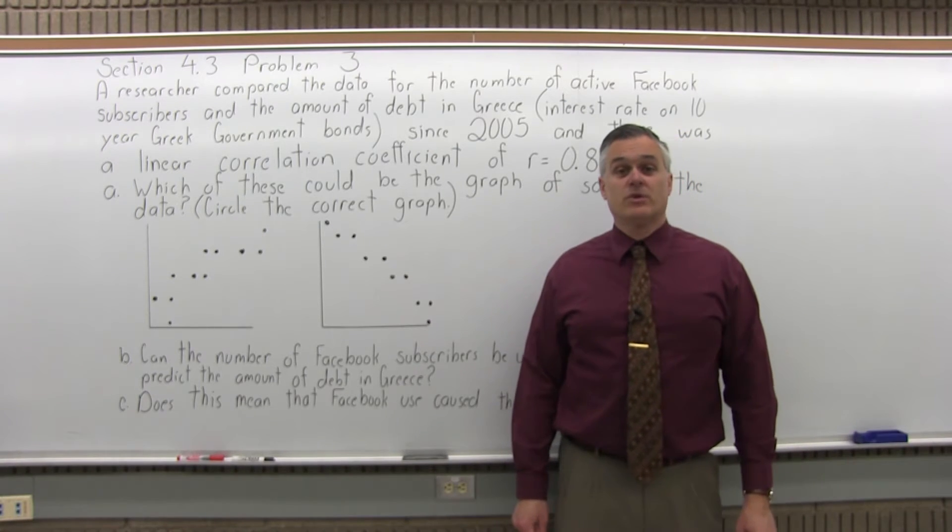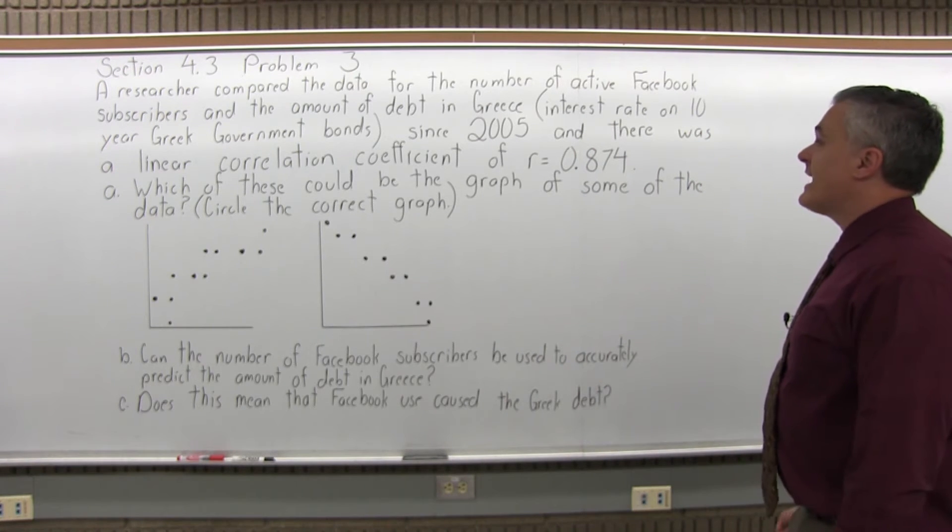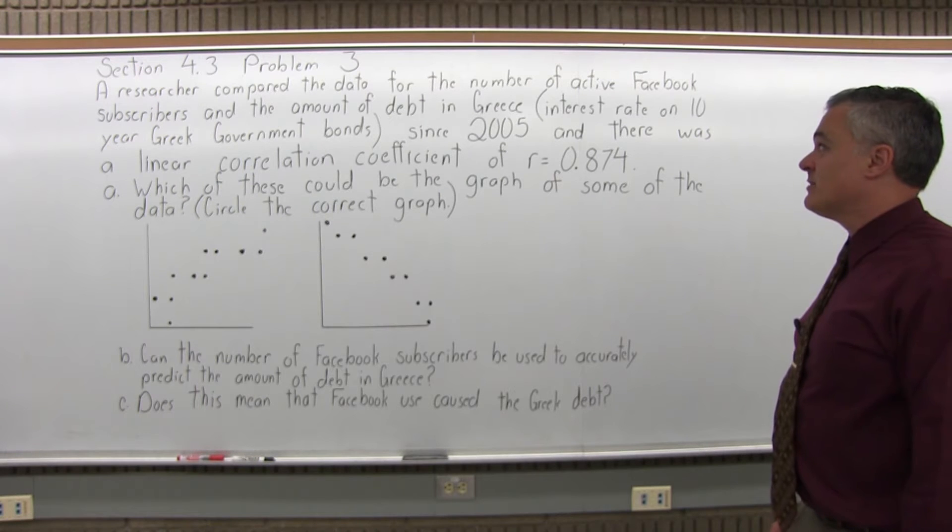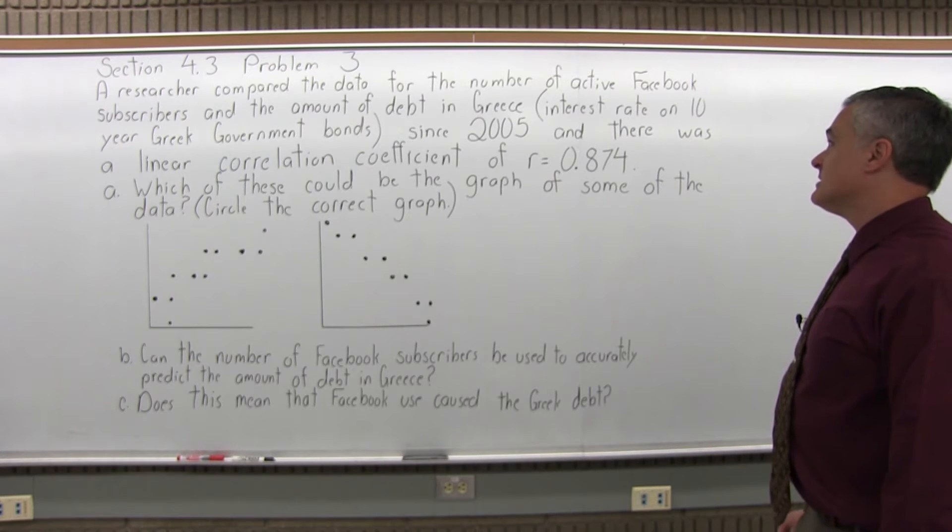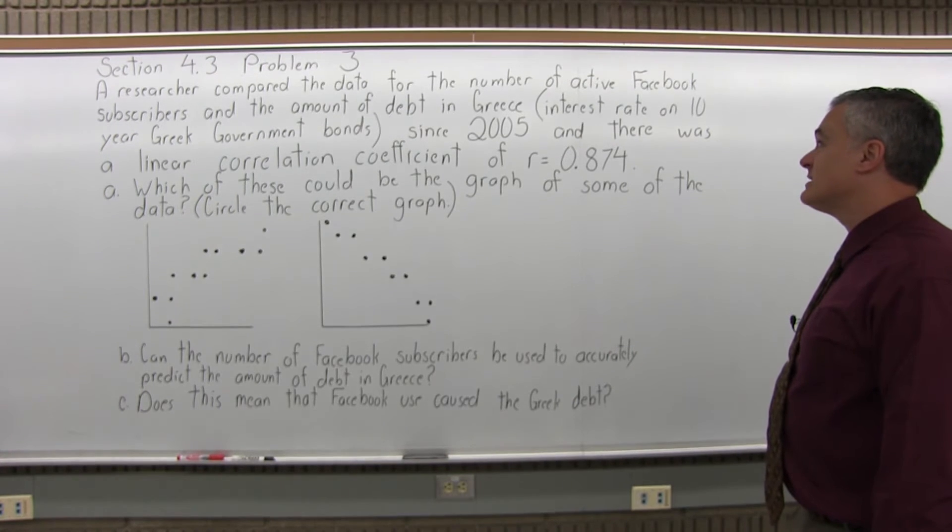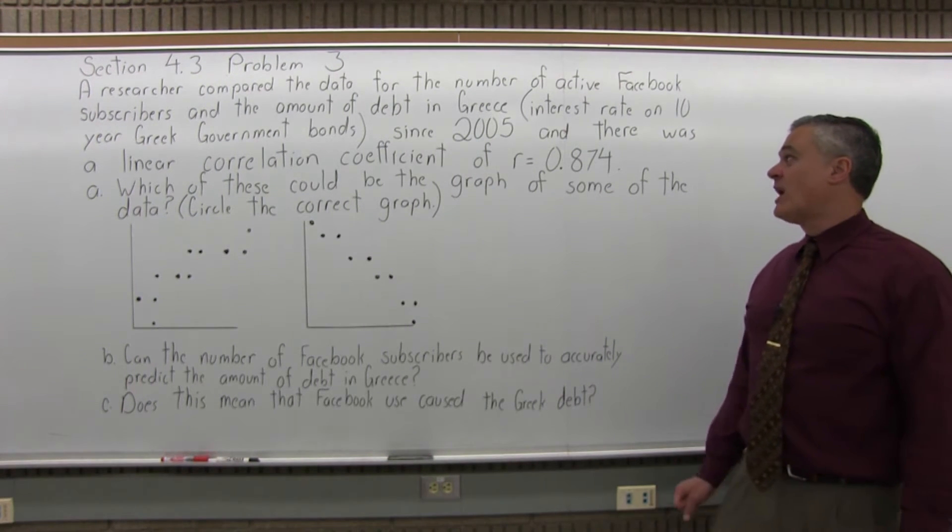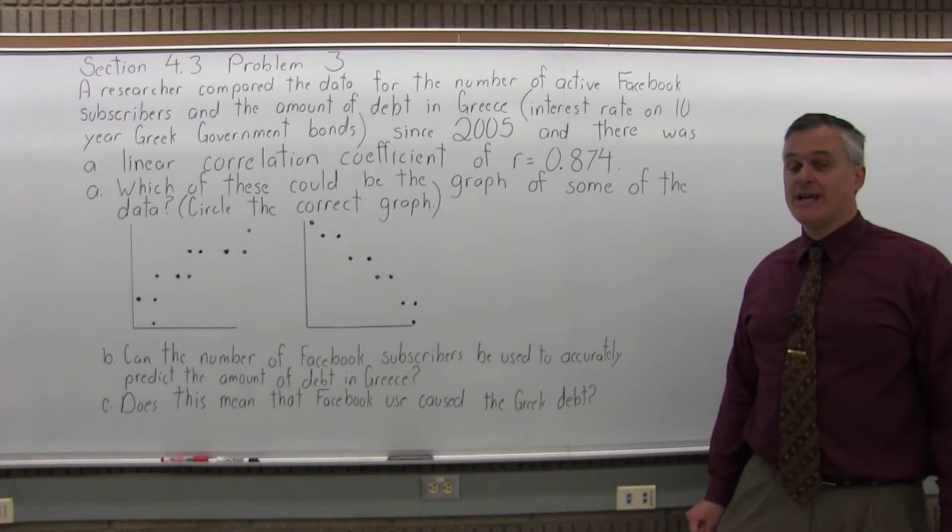This is Section 4.3, Problem 3. It says a researcher compared the data for the number of active Facebook subscribers and the amount of debt in Greece. This is interest rate on a 10-year Greek government bond since 2005, and there was a linear correlation coefficient of r equal to 0.874.